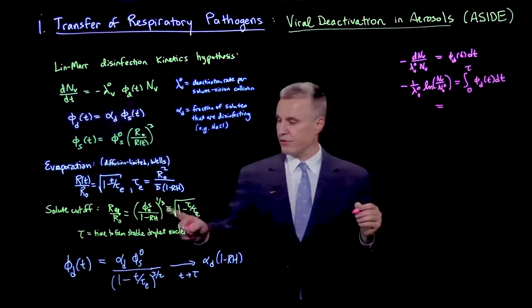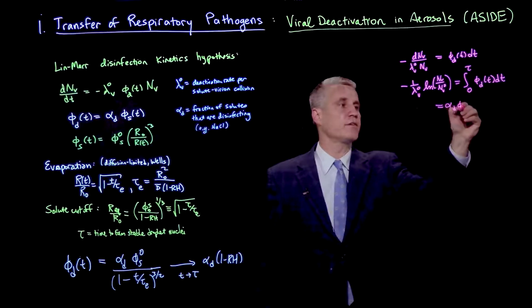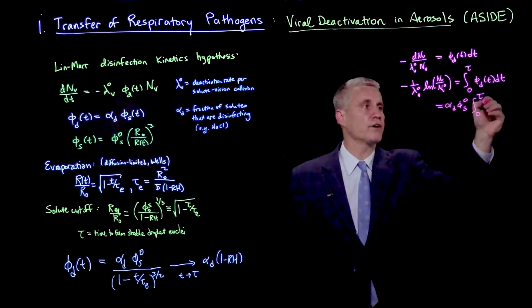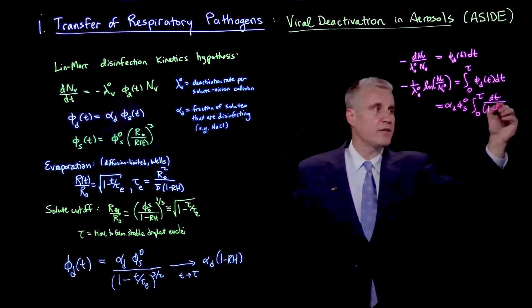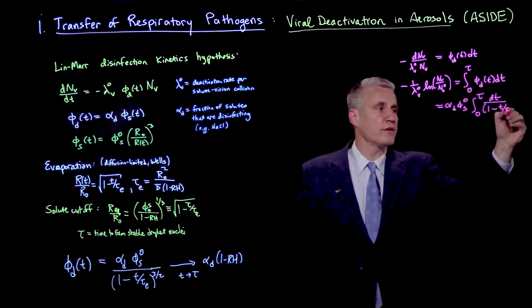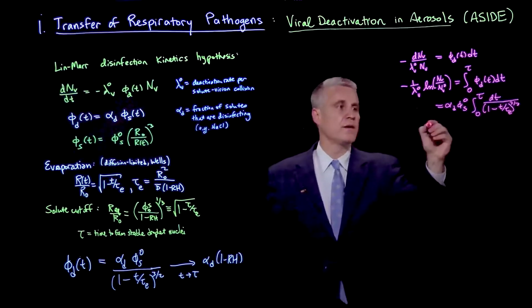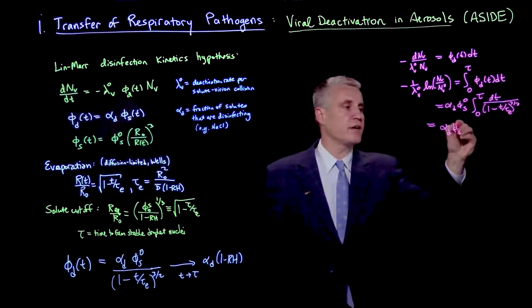Substituting our expression right here, we then see that we have alpha d phi s 0 times the integral from 0 to tau dt over 1 minus t over tau e to the 3 halves.